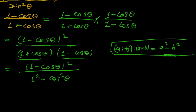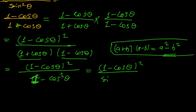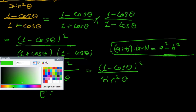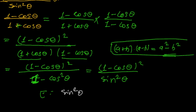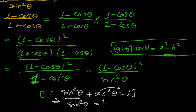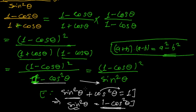So we get 1 minus cosine theta whole square divided by 1 minus cosine squared theta. Now, 1 minus cosine squared theta equals sine squared theta — do you remember the identity sine squared theta plus cosine squared theta equals 1? Rearranging, 1 minus cosine squared theta equals sine squared theta. So in the denominator, I substitute sine squared theta.